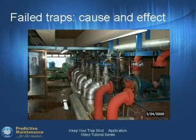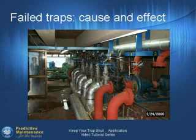Steam traps are necessary for the overall efficiency of heat energy transfer. When traps fail, they waste money. They create back pressure in the steam system and cause process failures or quality issues with your end product. If condensate is not removed from the system, it can pool in low areas of piping. Eventually the pool grows in size until it closes the pipe completely, causing back pressure and water hammer.